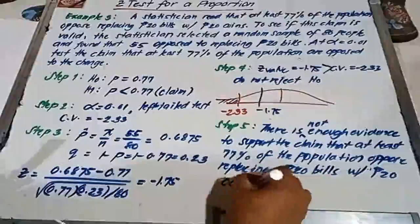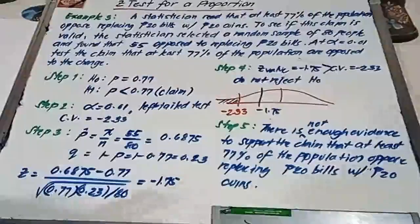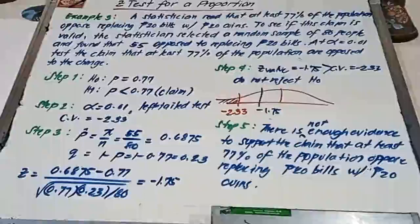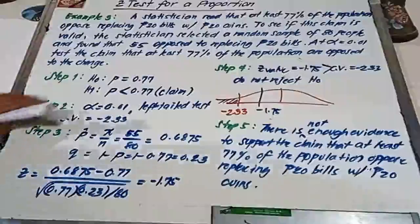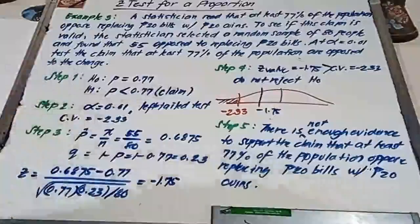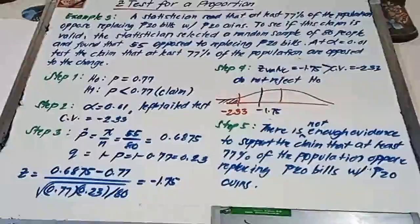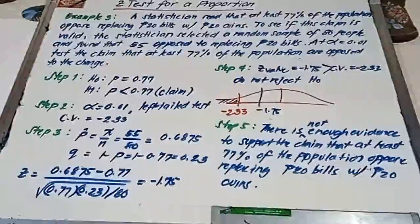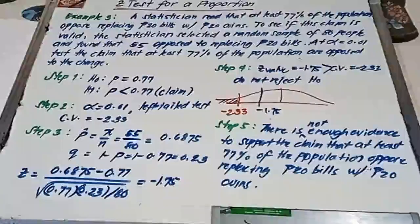That is our solution for example number 3. We reject the alternative because we accept the null hypothesis. I'm going to give you a practice sheet for this topic. Thank you.